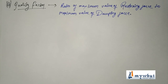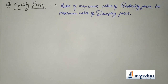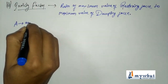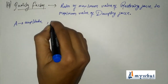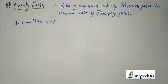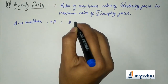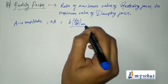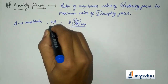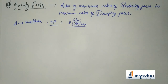The quality factor basically defines the quality of the vibrations. If A is the amplitude of vibration of a system, the maximum value of the restoring force is small a into capital A, and the damping force is b times dx/dt at maximum. Here, a is the restoring force per unit displacement, and b is the damping force per unit velocity.